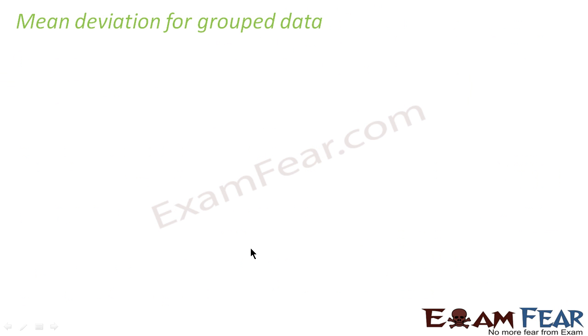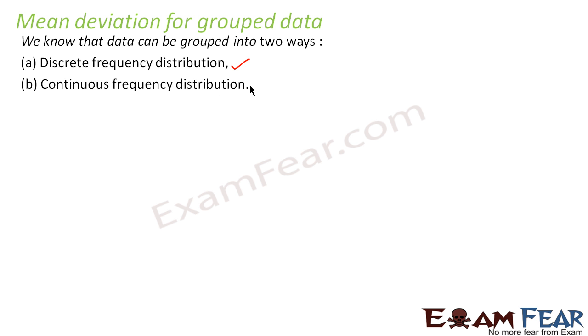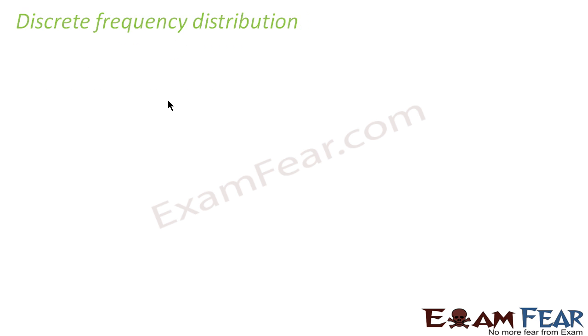Now we'll understand mean deviation for grouped data. Grouped data is of two types: one is discrete frequency distribution and the other is continuous frequency distribution. I'll explain this in the next part.